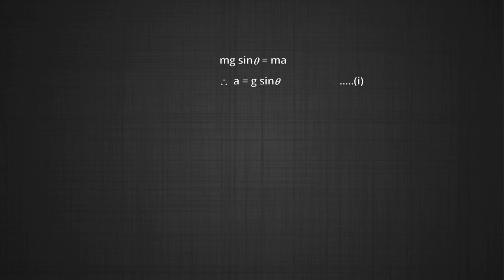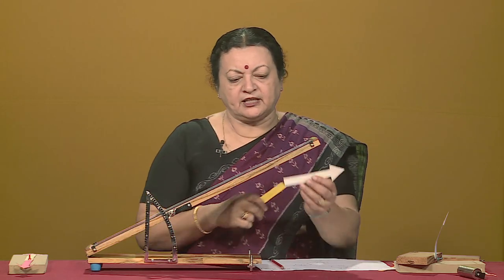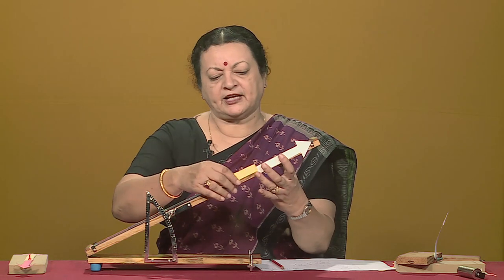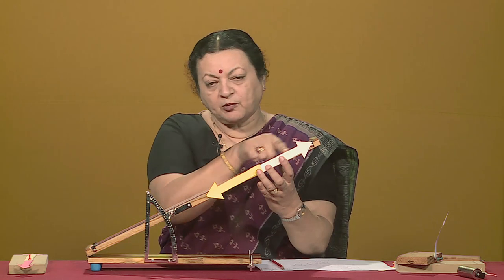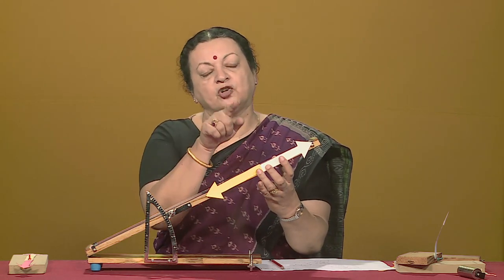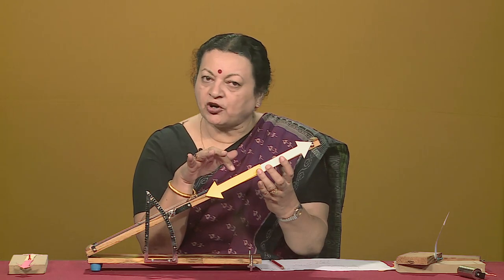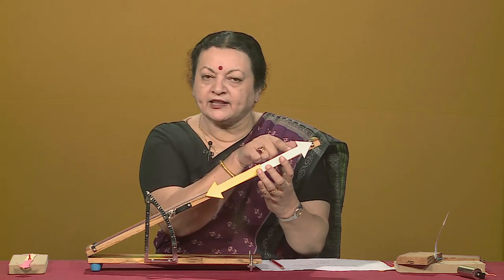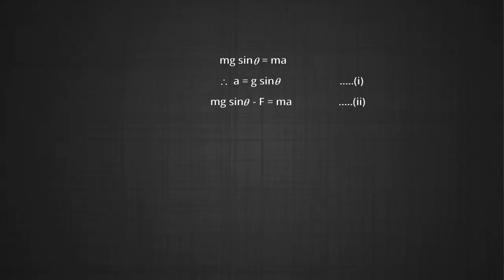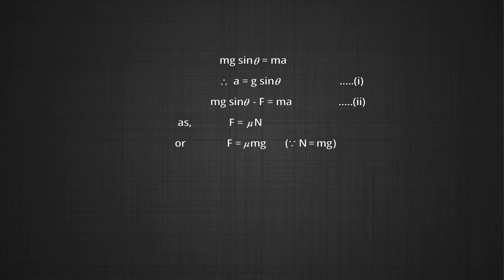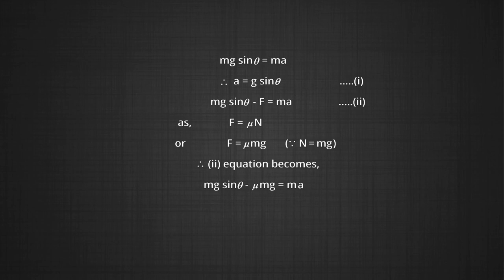Without friction: mg sin θ = ma, so acceleration a = g sin θ. With friction: the frictional force acts opposite to the direction of motion up the plane, with value μN = μmg cos θ. The equation becomes mg sin θ − f = ma, where f = μN, giving mg sin θ − μmg cos θ = ma. Therefore, acceleration a = g sin θ − μg cos θ.